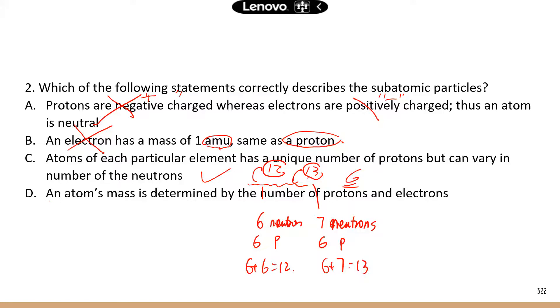Last statement, an atom's mass is determined by the number of protons and electrons. By this point, you should know it very well. Electrons do not count toward the atomic mass. Correct answer is C.